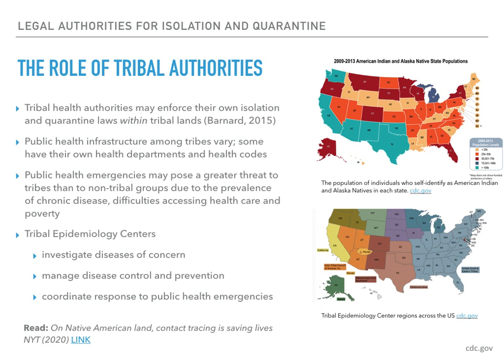The public health infrastructure amongst tribes varies greatly — some have their own health departments and health codes, while others lack these. Public health emergencies may pose a greater threat to tribes than to non-tribal groups due to factors such as the prevalence of chronic disease, poverty, and difficulties accessing care. In both the 1918-1919 influenza pandemic and the 2009 H1N1 influenza event, the mortality rate amongst Indians in the United States was roughly four times that of other groups. There are twelve tribal epidemiology centers across the U.S. that serve American Indian Alaska Native communities by managing public health information systems, investigating diseases of concern, and coordinating these activities with other public health authorities.